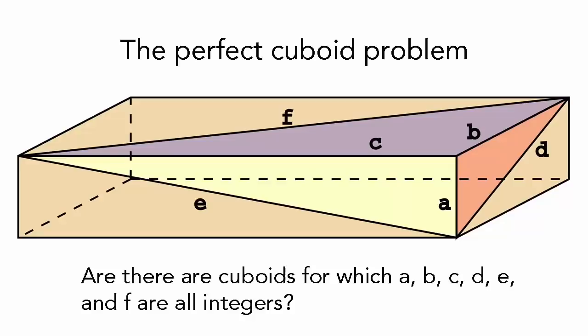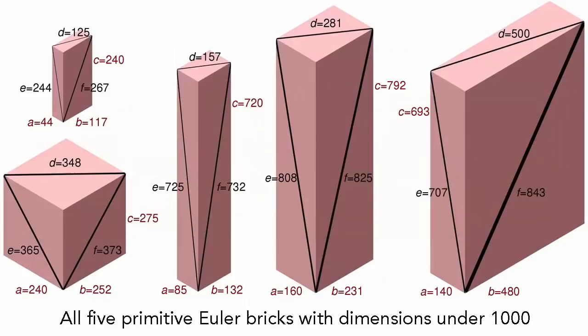But each of the three faces of a cuboid also has a diagonal. The perfect cuboid problem asks, are there any boxes where all seven of these numbers, giving the lengths of the three edges plus the four diagonals, are whole numbers? Mathematicians have come up with a few near misses. The shape known as an Euler brick is like a perfect cuboid, but its spatial diagonal doesn't have to be an integer length. The easing of this restriction allows solutions to be found.